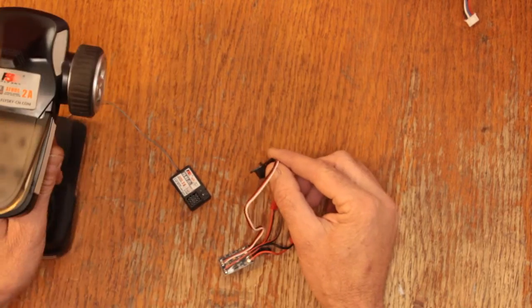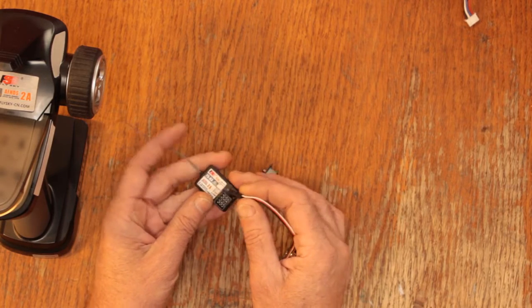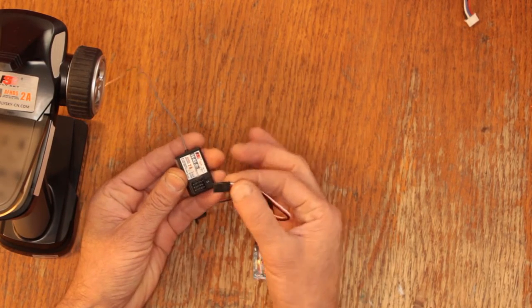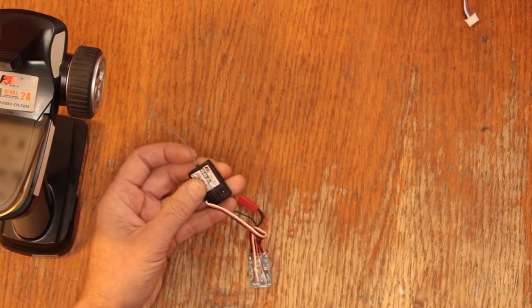The transmitter throttle is on channel 2 so when you're wiring this together you're going to put the ESC on channel 2 and you want the black negative wire on the right hand side there.